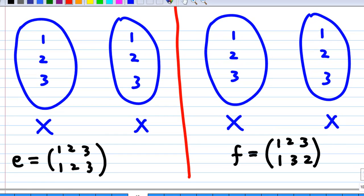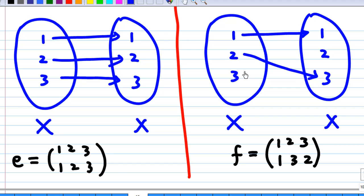E is a mapping that sends x to x. It sends 1 to 1, 2 to 2, and 3 to 3. F is a mapping from X to X again, but now this time f will send 1 to 1, 2 to 3, and 3 to 2.